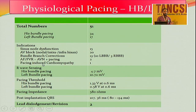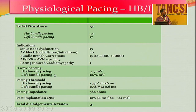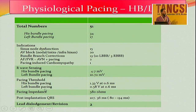For AF with a fast ventricular rate refractory to drug therapy, if AF is permanent, you can ablate the AV node and do physiological pacing — I have done two such cases. Pacing-induced cardiomyopathy is another area where CRT may not work but His bundle pacing will. Regarding R-wave sensing: across all 15 His bundle cases I had an average of 4.7 millivolts, while left bundle pacing had a good average of around 10 millivolts. The pacing threshold for His bundle is around 1.3V at 0.6ms pulse width.